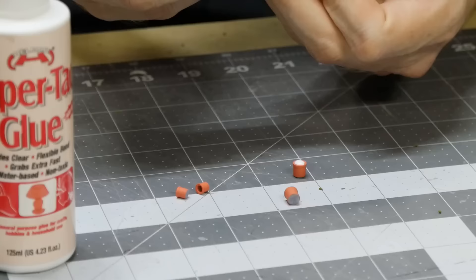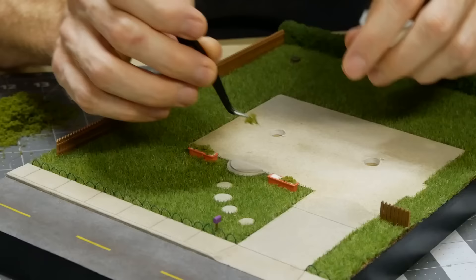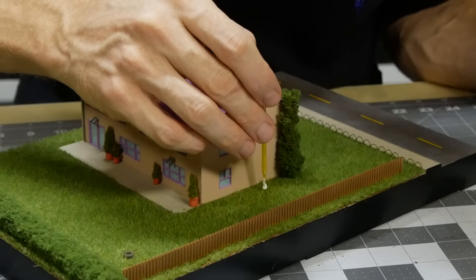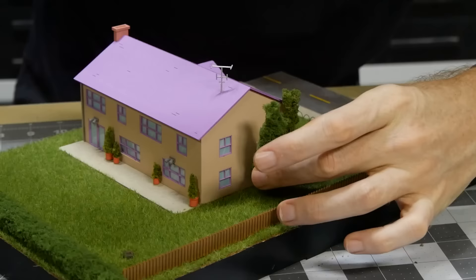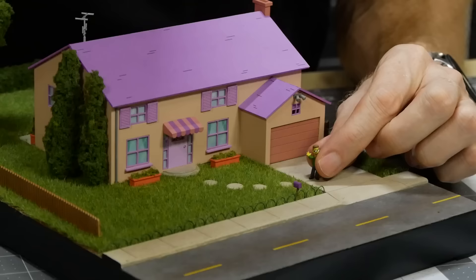These little pot plants look really cute. And the pot plants along the front have some foliage added as well. Once the trees are added, it's almost done. The final touch is Ned, Todd and Rod.